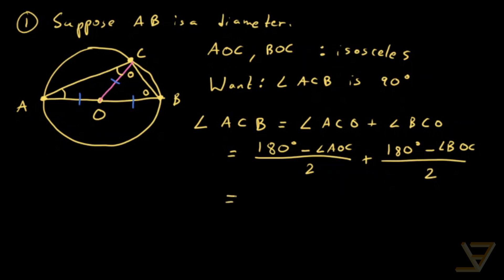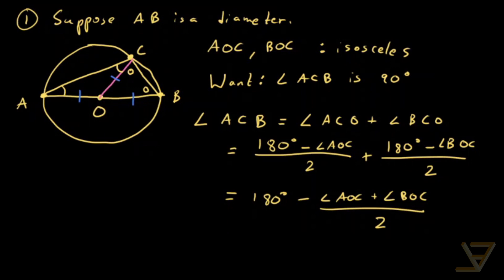And this is then equal to 180 degrees minus angle AOC plus angle BOC over 2. And if you look at angle AOC and BOC together, they're 180 degrees. So this is just 180 degrees minus 180 degrees over 2, which is equal to 90 degrees.